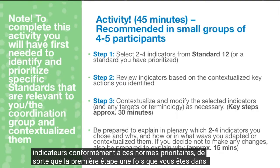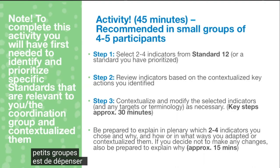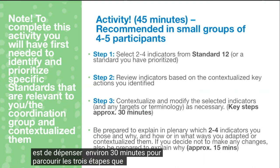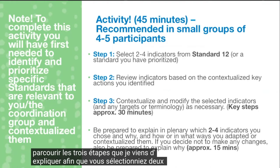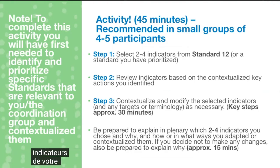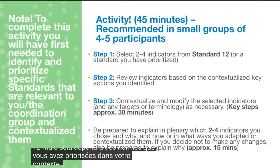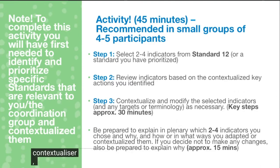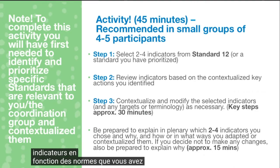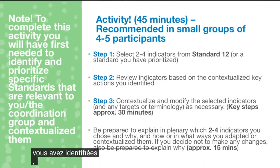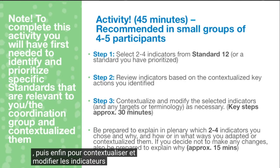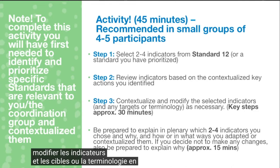Once in your smaller groups, spend about 30 minutes going through the three steps just explained. Select two to four indicators from your priority standard — Standard 12 is suggested here, but it will depend on which standards you have prioritized. Then review those indicators based on your prioritized and contextualized standards and identified key actions. Lastly, contextualize and modify the indicators and any targets or terminology accordingly.